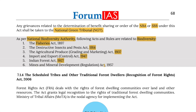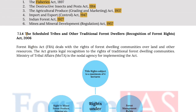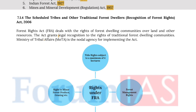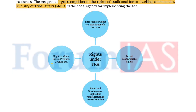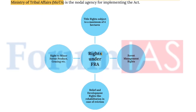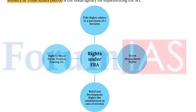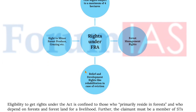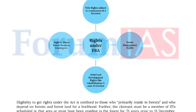The Scheduled Tribes and Other Traditional Forest Dwellers Recognition of Forest Rights Act of 2006 deals with the rights of forest dwelling communities over land and other resources. The act grants legal recognition to the rights of traditional forest dwelling communities. The Ministry of Tribal Affairs is the nodal agency for implementing the act. The rights enshrined under the FRA are: forest management rights, title rights subject to a maximum of 4 hectares, right to minor forest produce, grazing, etc., and relief and development rights like rehabilitation in case of eviction.